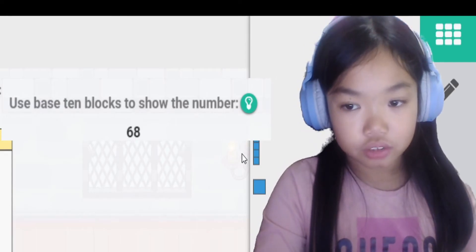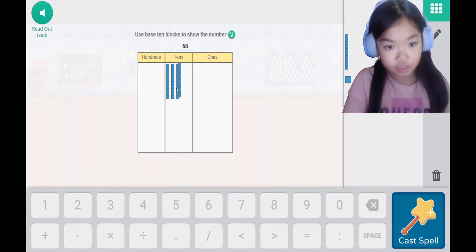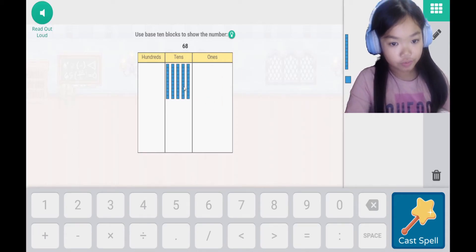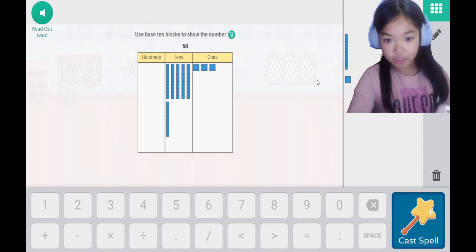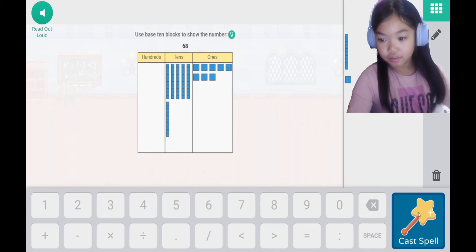Use base 10 blocks to show the number. Okay, I got three 10s: 1, 2, 3, 4, 5, because one more is 6, and 8 ones. So there's 1, 2, 3, 4, 5, 6, 7, 8. Yay! Look out! Oh, it's level 65.